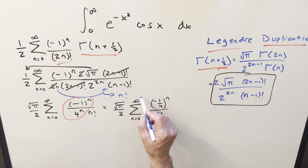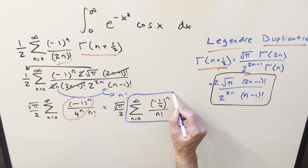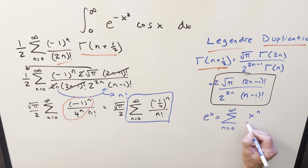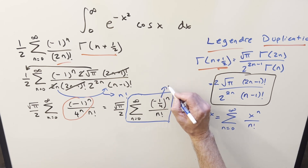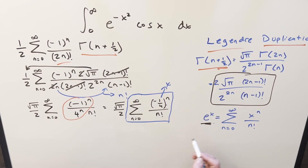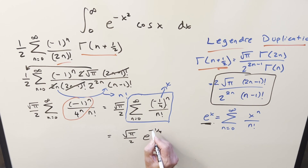This piece — (-1/4)^n / n! — is exactly in the form of the power series for e^x, which is the sum of x^n / n!. Here our x value is just -1/4. So we plug -1/4 in for x and get e^(-1/4). Bringing out the √π/2 constant, the final answer is √π/2 · e^(-1/4).